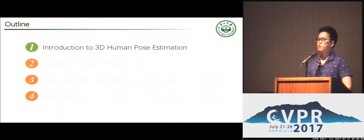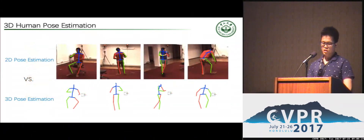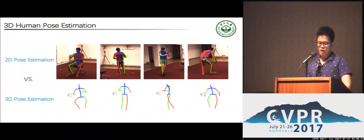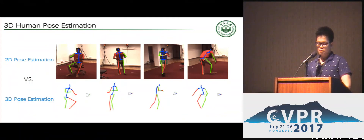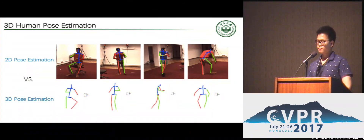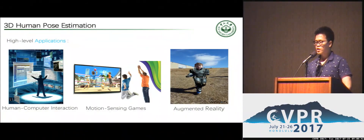Since our work aims to predict 3D pose from monocular videos, in the first part I will briefly introduce the 3D Human Pose Estimation task. Similar to 2D Pose Estimation, 3D Pose Estimation aims to predict the 3D joint coordinates, as illustrated in the figure. Poses from different viewpoints are provided. This task has many high-level applications, including human-computer interaction, motion-sensing games, and augmented reality.